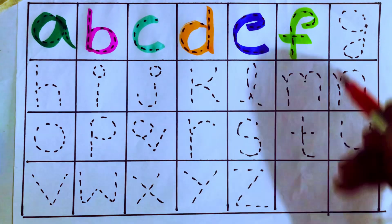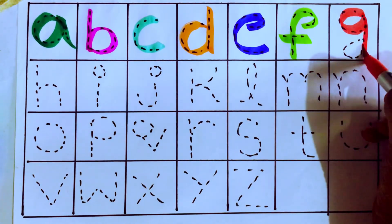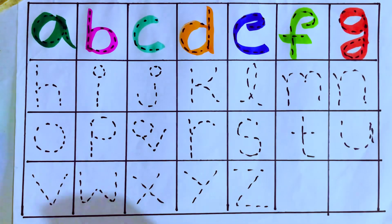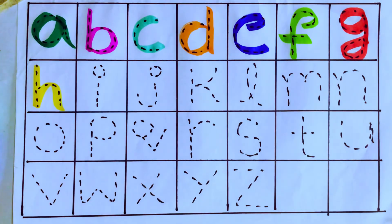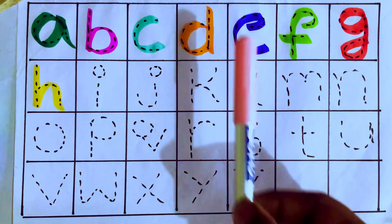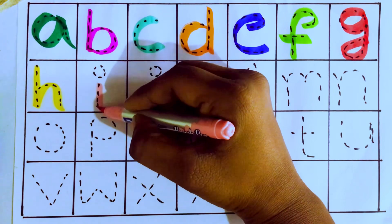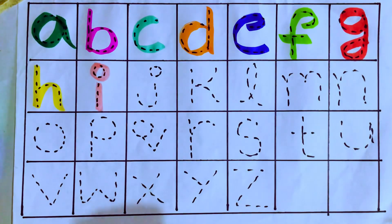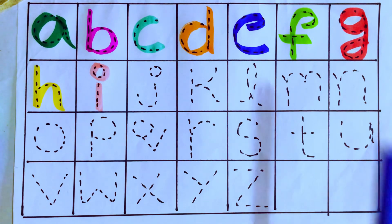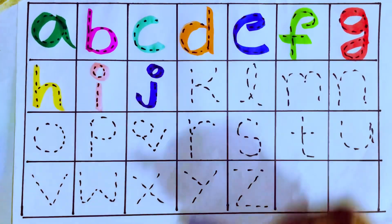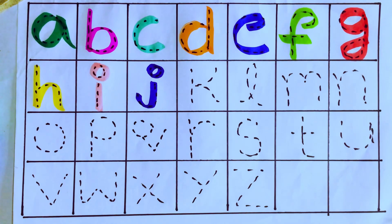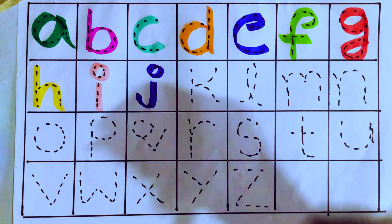Red color — G for gun. H for hen. I for igloo. Blue color — J for jar — J-A-R, jar. Light green color — K.